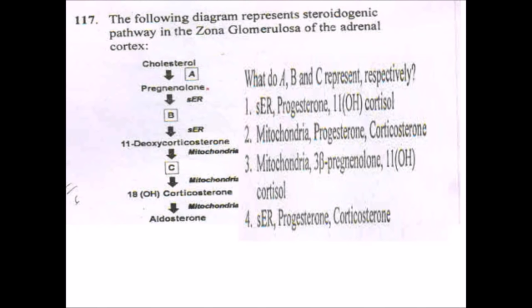Next question on steroid biosynthesis: cholesterol in the mitochondria is converted to pregnenolone, which then passes to the smooth endoplasmic reticulum and forms progesterone. Following the pathway, option C in the cycle is cortisol. The answer is option 2.